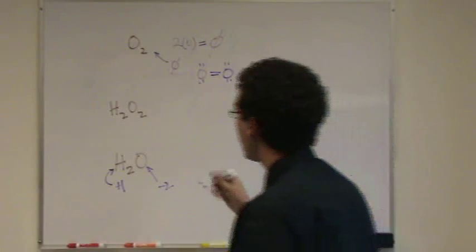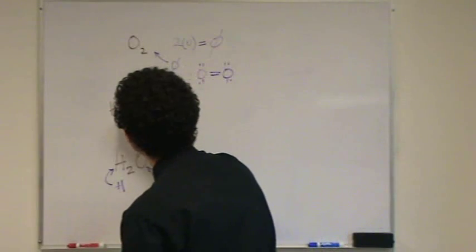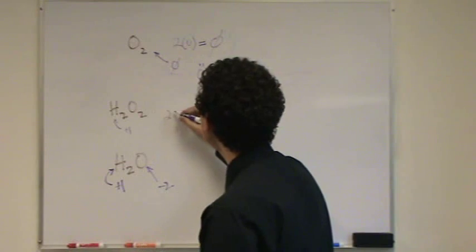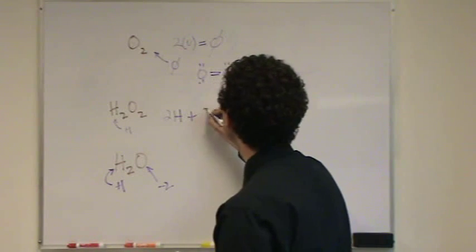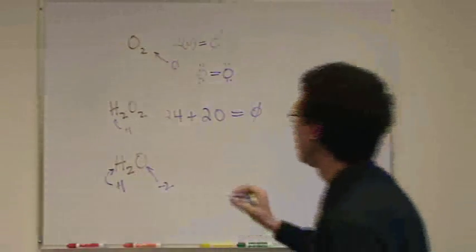And if you do this one, again, hydrogen, remember, is plus 1, like before. So if that's plus 1, if you set up your equation, 2 times the charge of hydrogen plus 2 times the charge of oxygen equals the overall charge of 0.